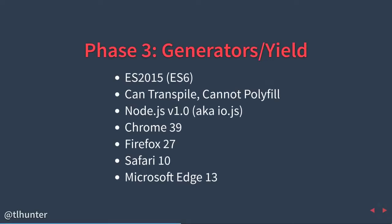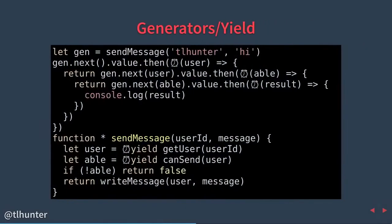Phase three: generators and yield. This is a new syntax introduced in ES2015. You can transpile to it in Babel. It cannot be polyfilled — it was first introduced in io.js version 1.0. I've made the generator code look a bit ugly on purpose just to step through it and show you how it works, but I'll show you an easier example in a moment.